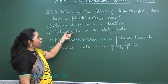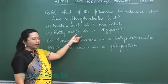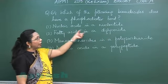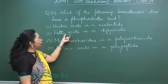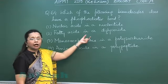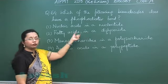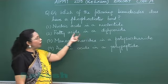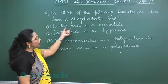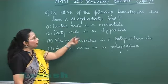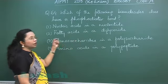Fatty acids in a diglyceride — which has two fatty acids and a glycerol — are linked by ester bonds. And nucleic acids, where nucleotides in a nucleic acid are linked by the phosphodiester bond.